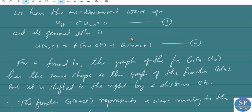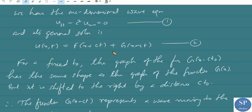We have already discussed in the last lecture about the one-dimensional wave equation and its general solution. The one-dimensional wave equation is u_tt minus c² u_xx = 0, and we obtained its general solution u(x,t) = f(x+ct) + g(x-ct), where f and g are twice continuously differentiable arbitrary functions.